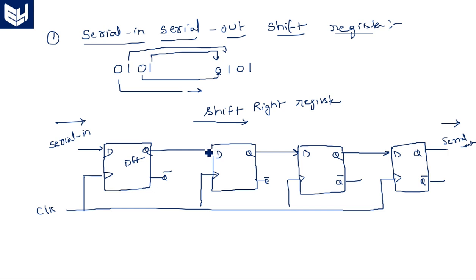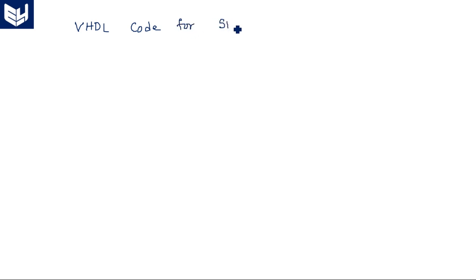Now, for the serial in serial out shift register, how do we write a VHDL code in the structural model? In the structural model, for a four-bit shift register, there are four D flip-flops. We need to write the D flip-flop program first. I have already explained how to write a VHDL code for different types of flip-flops in previous classes, so I am using that D flip-flop code here for our shift register.